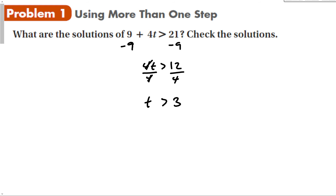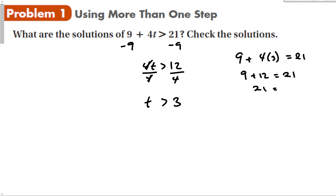If I want to check this, I can check: is 9 plus 4 times 3 equal to 21? And 9 plus 12 is 21. So that's good. Now I should pick a number bigger than 3 to see if the inequality remains true.